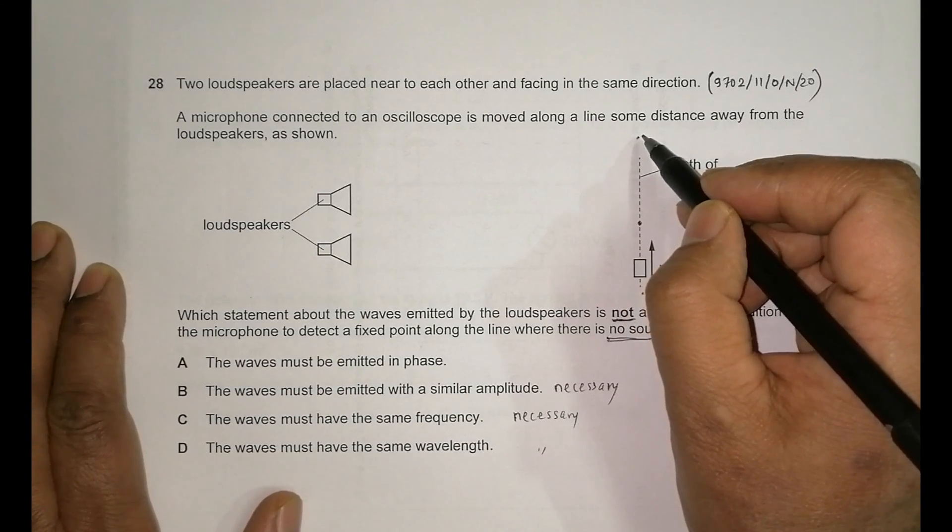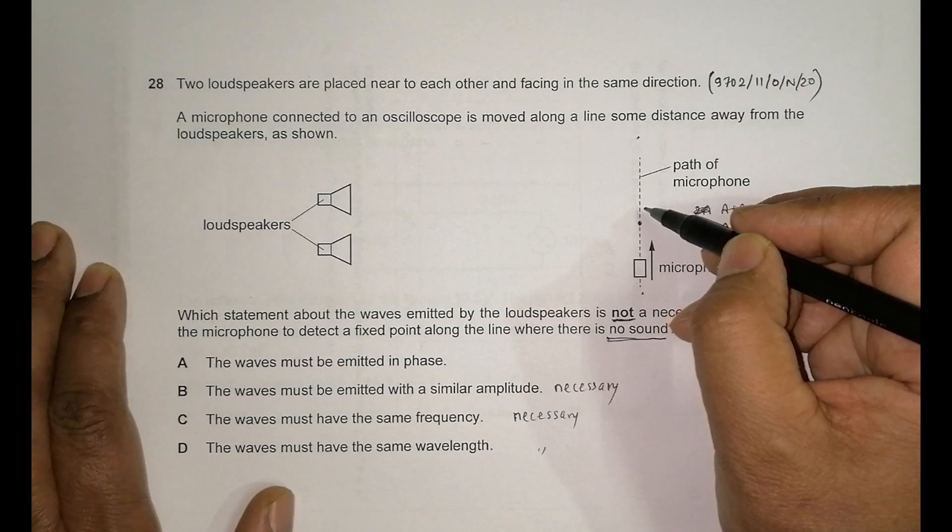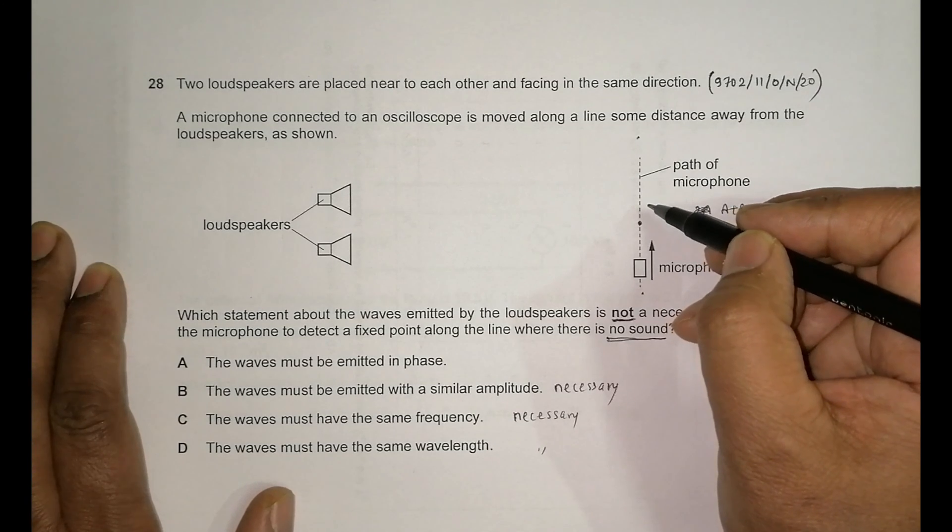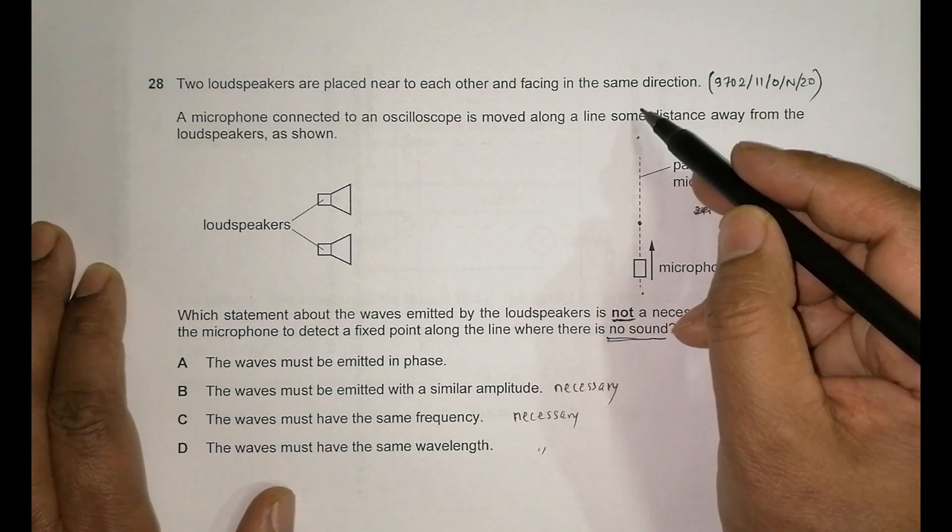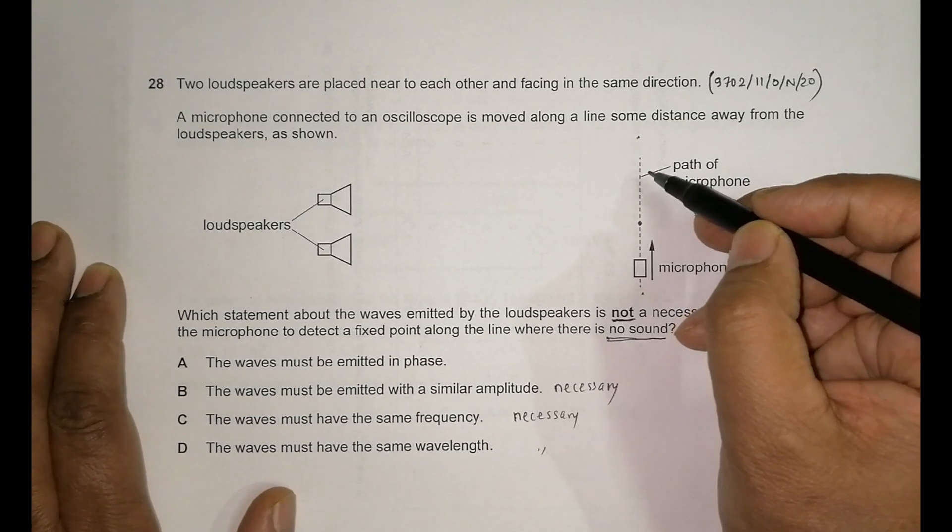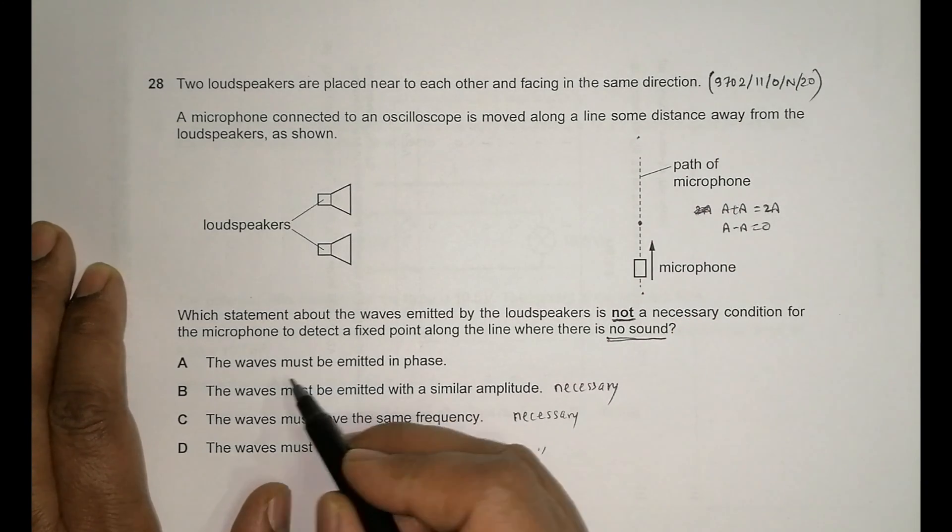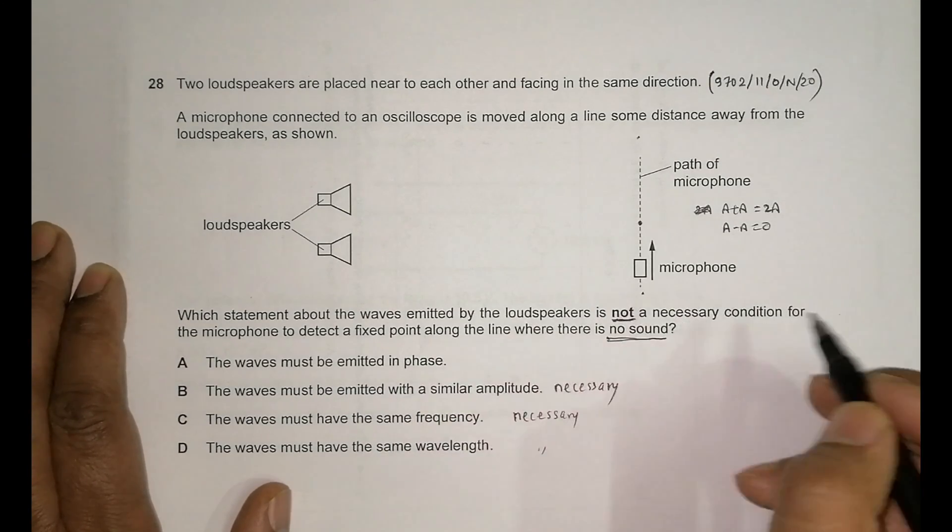For example, in the first dark it will be about lambda by two, and in the second dark it will be three lambda by two, in the third dark it will be five lambda by two, and so on. So they are the constant phase differences there at that position, so it is not necessary that they have to be in the same phase.